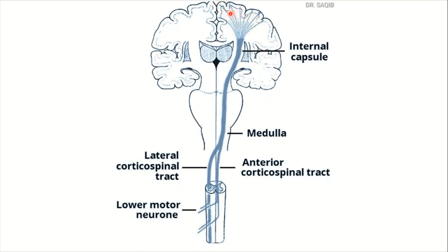This tract comes from the cerebral cortex. I will tell you in detail which areas are involved. Here is the general layout — it passes through the corona radiata, the posterior limb of the internal capsule, then enters the brainstem through the midbrain, the pons, and the medulla oblongata. Here there is a protuberance called the pyramid, where the motor decussation occurs. 90% of the fibers decussate and form the lateral corticospinal tract, ending in the posterior quadrant of the lateral funiculus of the spinal cord. The 10% of fibers that do not cross descend in the anterior funiculus.